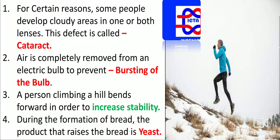Air is completely removed from an electric bulb to prevent bursting of the bulb. The complete air is taken out and a vacuum is created; then Argon and Nitrogen are filled in. Argon is combustible; Nitrogen is non-combustible. The filament inside is made of tungsten.